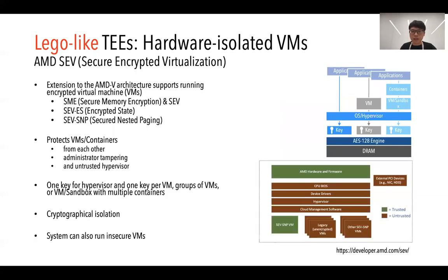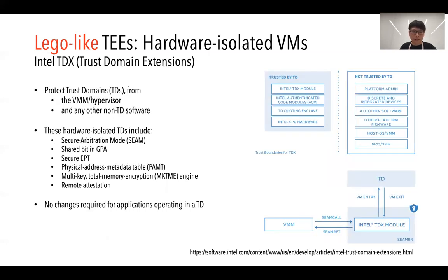The third type is hardware-isolated VMs. I'll introduce AMD SEV and Intel TDX. For AMD SEV — Secure Encrypted Virtualization — it supports running encrypted virtual machines by providing one key for the hypervisor and one key per VM, so that each VM can be protected from each other and from an untrusted hypervisor, as well as from administrator tampering, based on cryptographic isolation. SEV also maintains compatibility by running normal VMs on the same host. Intel TDX, Trust Domain Extensions, recently released by Intel, is very similar to AMD SEV but uses different methodologies. For hardware-isolated VMs in general, no changes are required for applications to operate inside a VM.